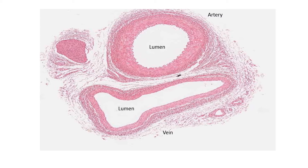The outer layer is called the tunica externa. You need to find out which tissues it is composed of — collagen, smooth muscle, or elastic fibers. That needs to be in your handout and you need to commit that to memory.